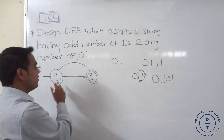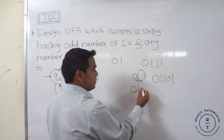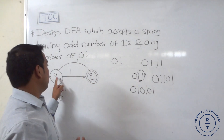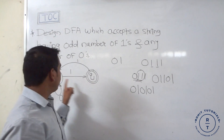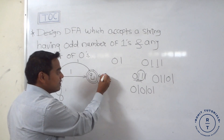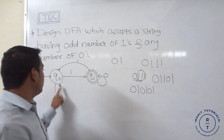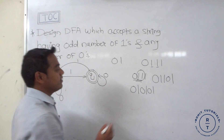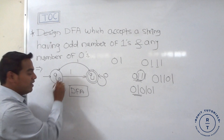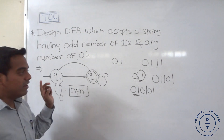Now completing the DFA: at q1 state, when '0' appears, we keep it at q1 (self-loop on 0 at q1). So at q0: '0' transitions to q0, '1' transitions to q1. At q1: '0' transitions to q1, '1' transitions back to q0. All transitions at both states are now complete.